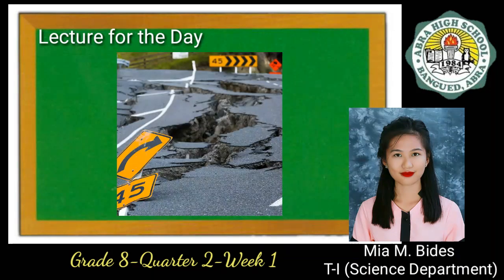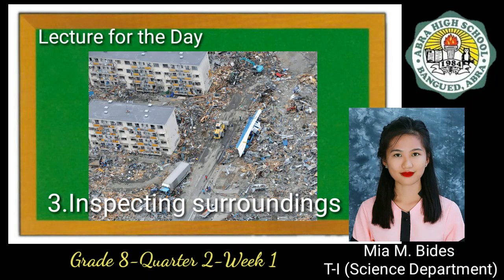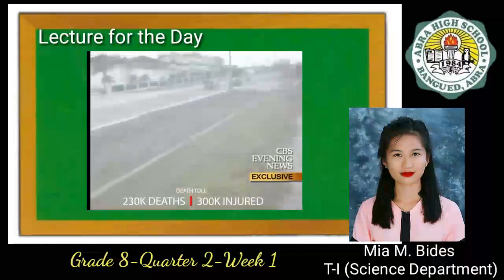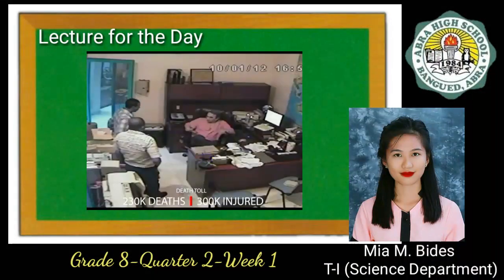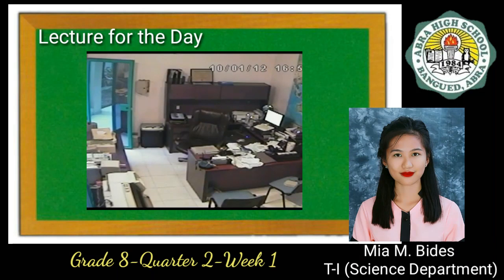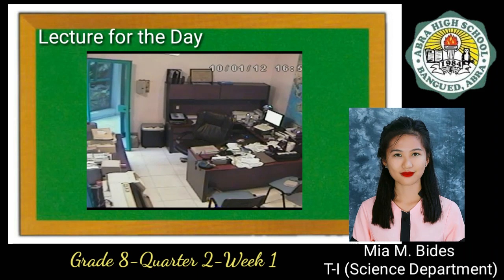Nevertheless, another method is by inspecting the surroundings. For example, a fault may cross a path and because of that, the road is displaced. Or a fault may pass over a river and the river current is then changed. Or a fault may slice through mountains and form cliffs. It is not easy for just anyone to spot an active fault.